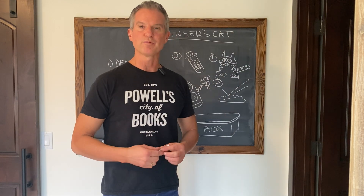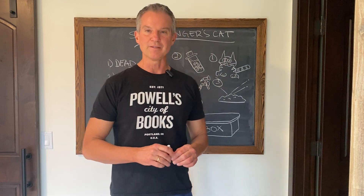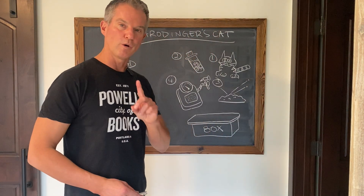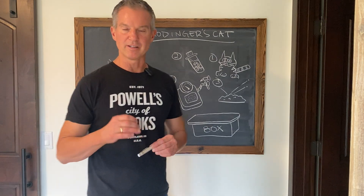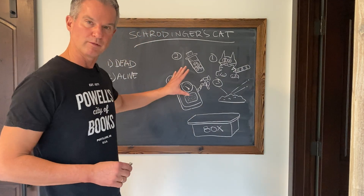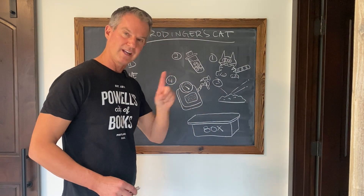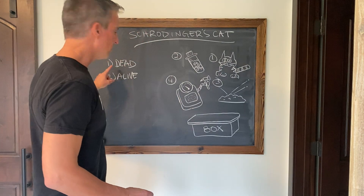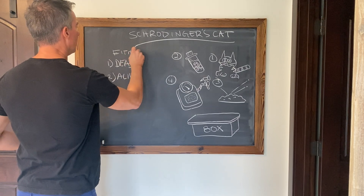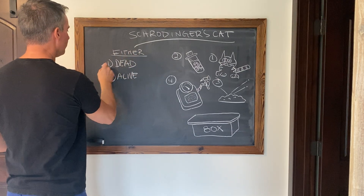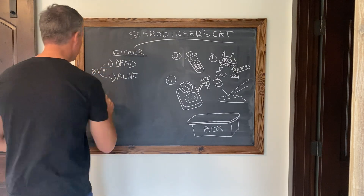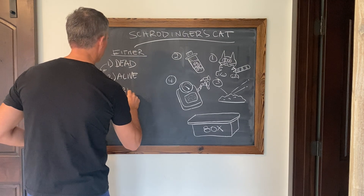This is where it gets weird, though. This is where the thought experiment leaves the comfortable realm of our intuitive knowledge. Because, according to Erwin Schrodinger, the Nobel Prize-winning physicist who designed this thought experiment, that's not the state the cat would be in. So long as the box is sealed and you can't look inside, the cat is not either alive or dead, like our common sense would tell us. The cat is actually both — the cat exists in a state called superposition.